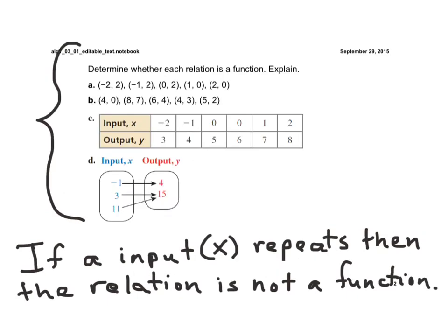If we look at letter A, I know that negative 2 goes with 2, negative 1 goes with 2, 0 with 2, 1 with 0, and 2 with 0. If you look at that, none of the x values repeat. Therefore, each input is paired with a different output. So, this is a function.